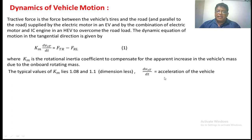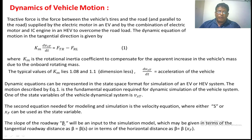Km always lies between 0.08 to 1.1, dimensionless. dVxt/dt is equal to the acceleration of the vehicle. This is the fundamental equation. We want one more equation to describe the dynamics of vehicle motion, so we take beta, which can be represented in terms of S, where S is the distance travelled by the vehicle. Xf also is a state variable.